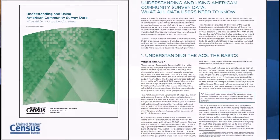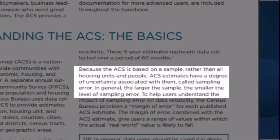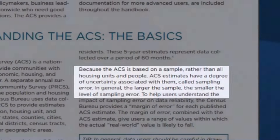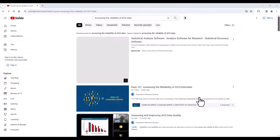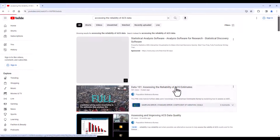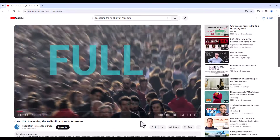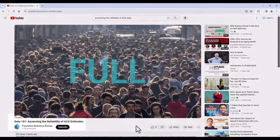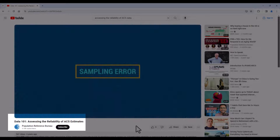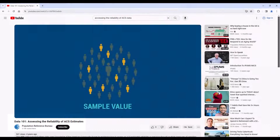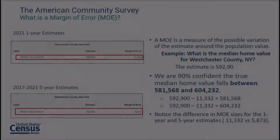Because the ACS is based on a sample rather than all housing units and people, ACS estimates have a degree of uncertainty associated with them called sampling error. In general, the larger the sample, the smaller the level of sampling error. To learn more about assessing the reliability of ACS estimates, see the tutorial provided by the Population Reference Bureau on assessing the reliability of ACS estimates.